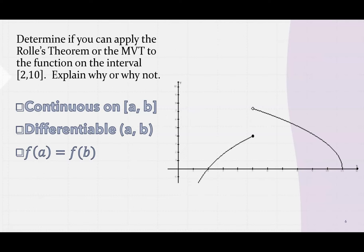For this function, there is a jump discontinuity, so it is not continuous. As soon as you find it's not continuous, you can say the Mean Value Theorem does not work, and Rolle's Theorem doesn't work either.